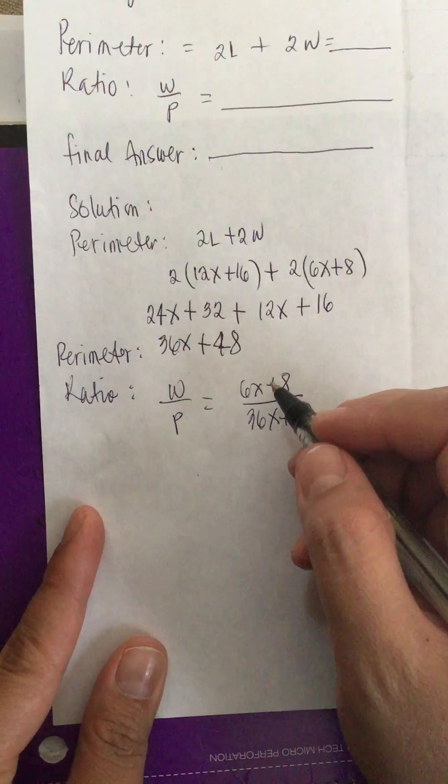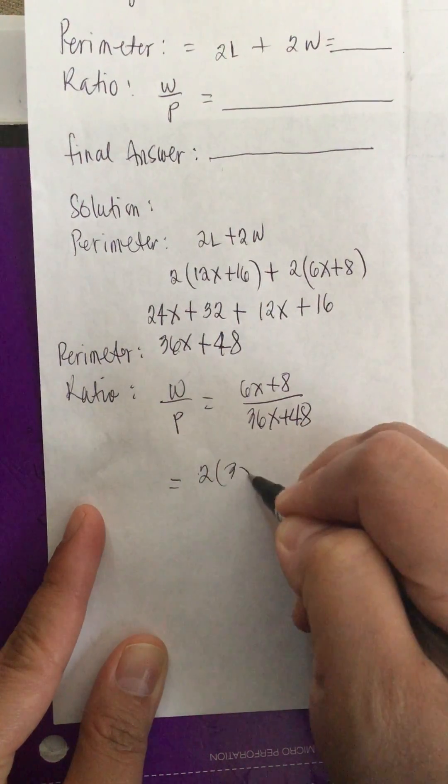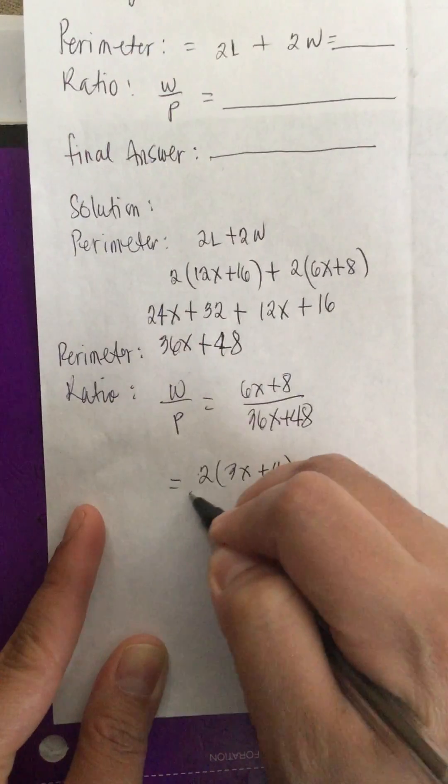We can factor out a 2 from the numerator. This equals 2 times 3x plus 4. And on the bottom,